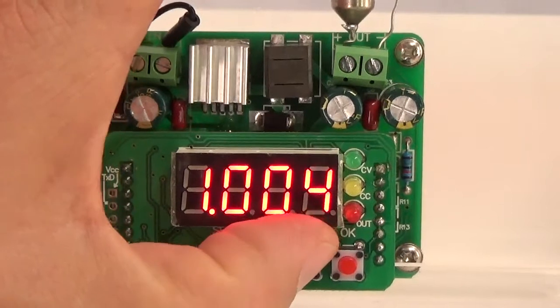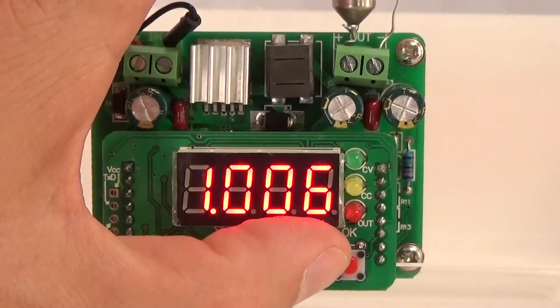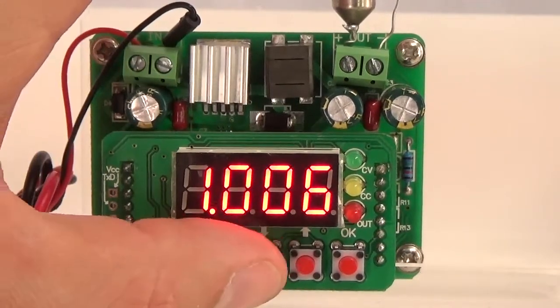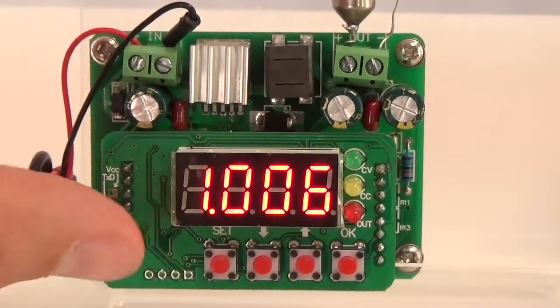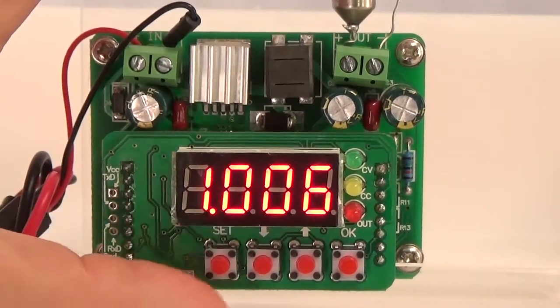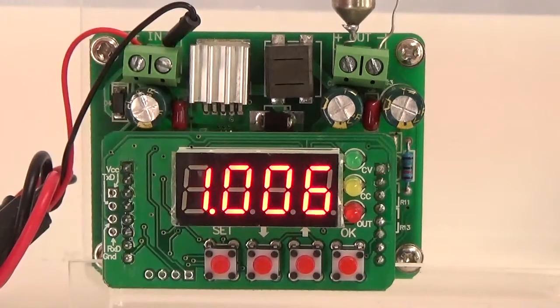You can set the number of mA, now it is 1A and 6 mA, and click the save button, that is it.